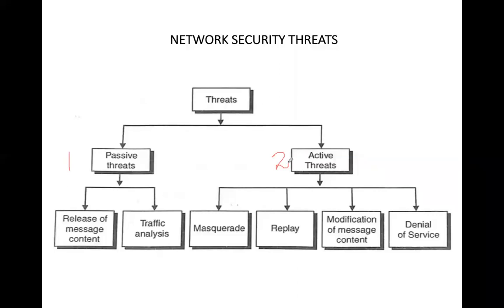Active threats deal with the learning about the contents of the transmission — learning about the contents of the message — but with no modification for passive threats. In active threats, the attacker basically tries to modify the information. For passive threats, the attacker will observe the information but will not try to modify it. For active threats, the attacker will capture the information and then modify the captured information.